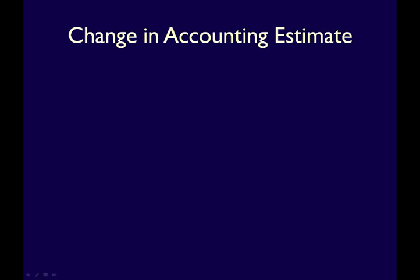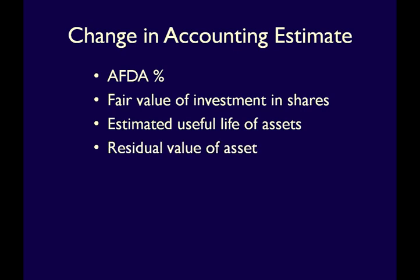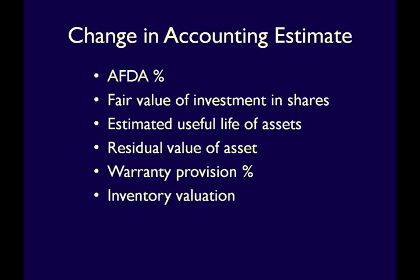What are some examples of changes in estimates? A few examples would be: a change to the percentage used to calculate the allowance for doubtful accounts, a change in the value of investments due to new market conditions, a change in the estimated useful life of long-lived assets or the residual value, the percentage used to calculate warranty provisions, and the value of inventory when obsolescence is an issue. Estimates are a normal part of accrual accounting, required by both IFRS and ASPE.